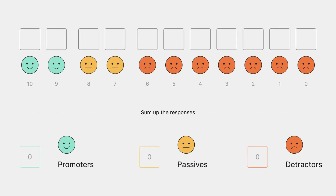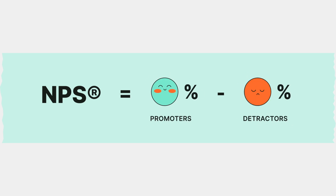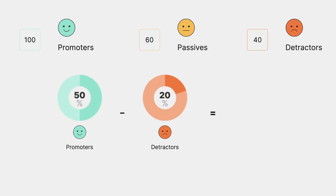So, let's say 200 customers responded to your survey. Let's also say you got 60 passives, 40 detractors, and 100 promoters. The distribution could be something like this. According to the formula, we omit the passives, but they will be taken into account because we use percentages of promoters and detractors, not their amounts. So, we have 50% of promoters and 20% of detractors. That means the score is 30.